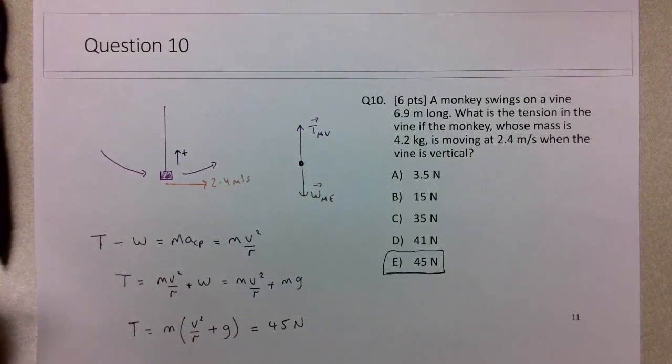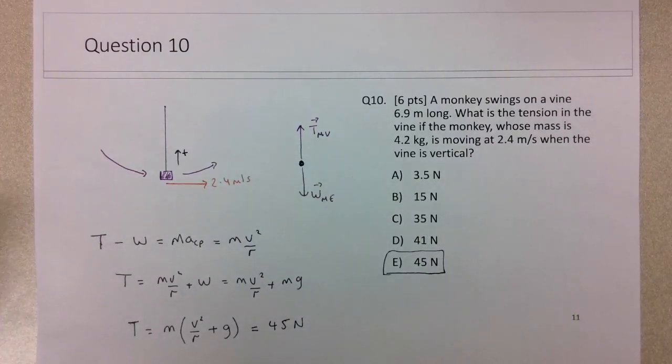So we chose E being the correct answer for this case. So circular motion problem, thinking about Newton's laws in the context of circular motion and solving for that with centripetal acceleration—a good combination of concepts in this question.